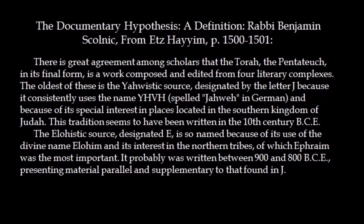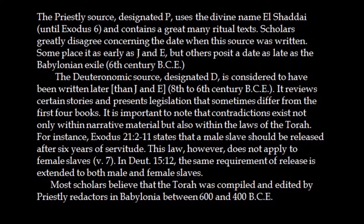J is because the Yud-Heh-Vav-Heh seems to use that name, and in German that starts with a J. There's been a lot of adjustment of this theory, but the assumption is the J tradition was written in the 10th century BCE from the southern kingdom of Judea. The Elohistic source called E is named because of the use of the divine name Elohim, and seems to come from the north, written around 900 to 800 BCE. Some scholars now refer to the combined J-E source.